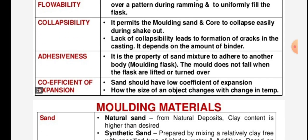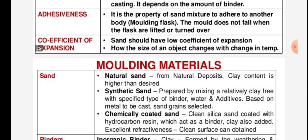Lack of collapsibility leads to formation of cracks in the casting. It depends on the amount of binder. Adhesiveness is the property of the sand mixture to adhere to another body, such as the molding flask, so the mold does not fall when the flasks are lifted or turned over. Coefficient of expansion: sand mold has a low coefficient of expansion, referring to how the size of the object changes with change in temperature.